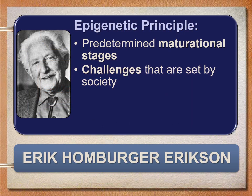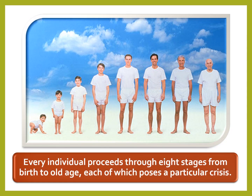The epigenetic principle refers to predetermined maturational stages, which Erik Erikson mentioned in his theory. It is the growth cycle of human life — every individual proceeds through eight stages from birth to old age, each of which possesses a particular crisis. Erikson's theory suggests that your ego identity develops throughout your entire life during these eight specific stages.